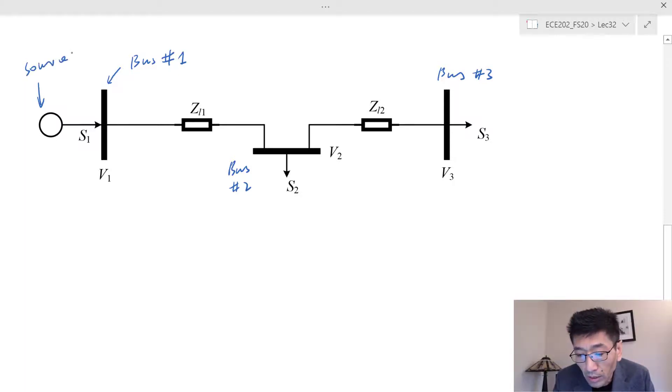This circle represents the source, the three-phase source. The arrow going into this—the S1—this is the complex power delivered to bus number one, or fed to bus number one from the source.